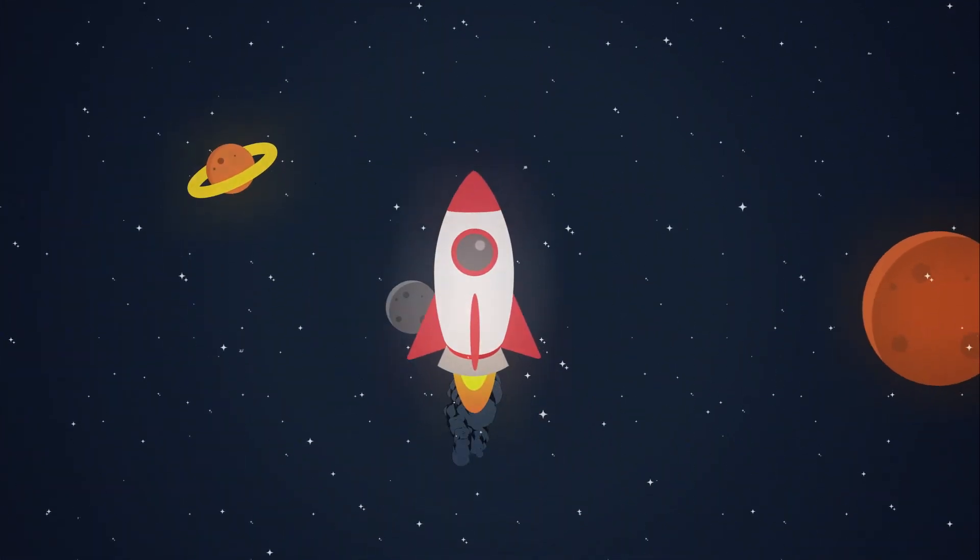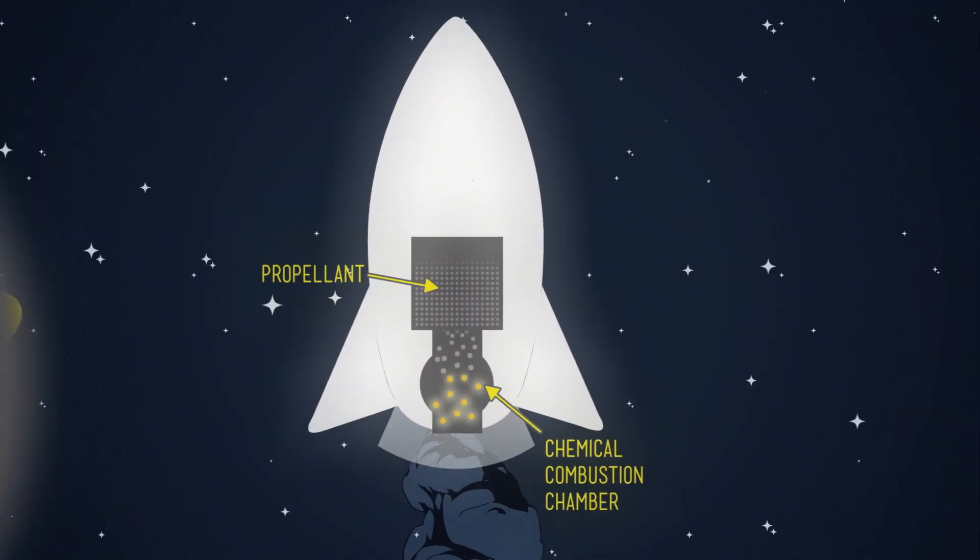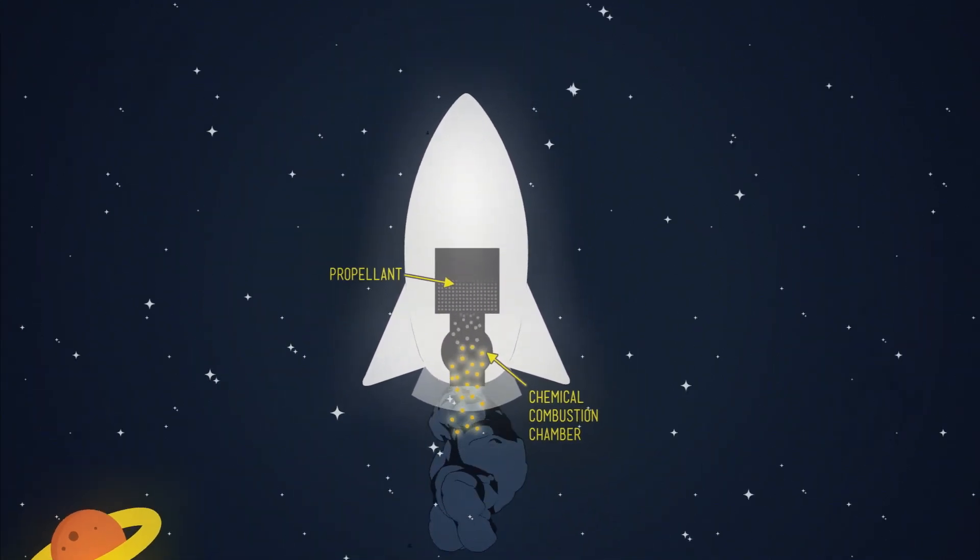A chemical rocket burns its fuel, using up fuel much faster. But the burnt products leaving the rocket are slower, meaning it is less efficient.